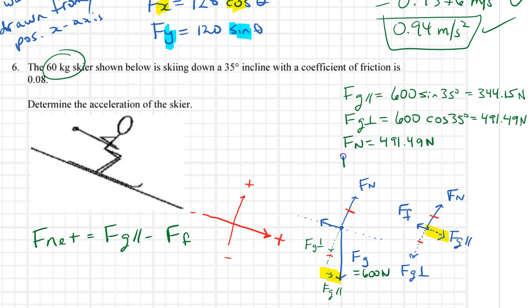My force of friction - this is why I figured those last two out - is mu times the normal force. So mu is 0.08, and when I multiply that times the normal force of 491, I get 39.3.